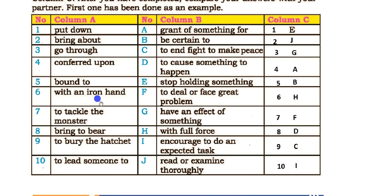Number 6: With an iron hand — H — with full force. Number 7: To tackle the monster — F — to deal with or face a great problem. Number 8: Bring to bear — D — to cause something to happen. Number 9: To bury the hatchet — C — to end a fight, to make peace. Number 10: To lead someone to — I — encourage to do an expected task.